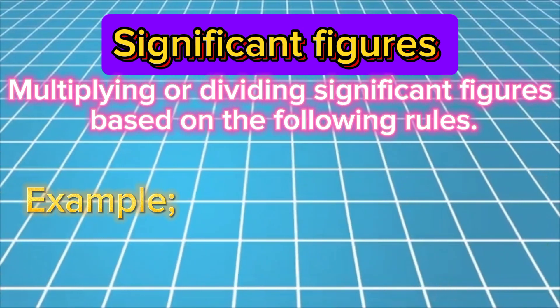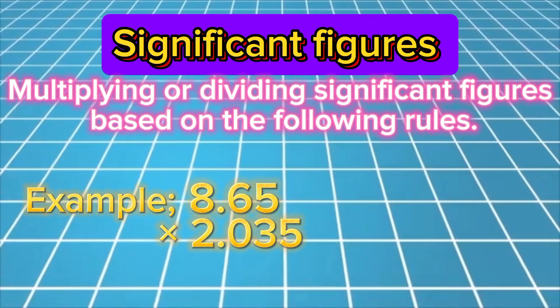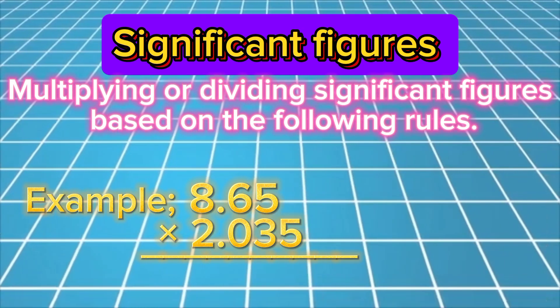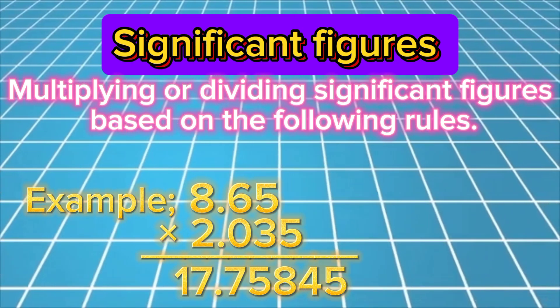For example, while multiplying two measured values, 8.65 and 2.035, if you use a calculator, your answer is 17.75845, which is completely wrong.